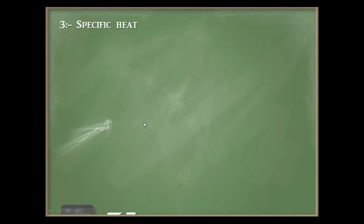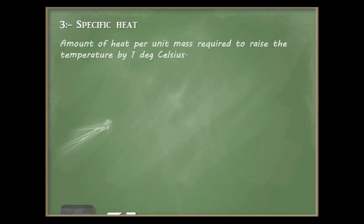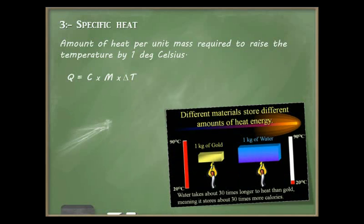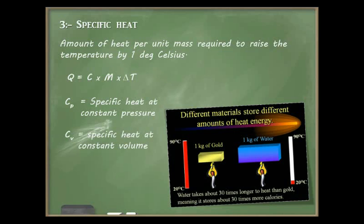Next is specific heat. Specific heat is defined as the amount of heat per unit mass required to raise the temperature by 1 degree Celsius. It is given by q = c × m × ΔT, where c is specific heat, m is unit mass, and ΔT is the change in temperature. Specific heat at constant pressure is denoted by cp, and at constant volume by cv. For instance, 1 kg of water requires more heat to raise its temperature by 1°C compared to 1 kg of gold.